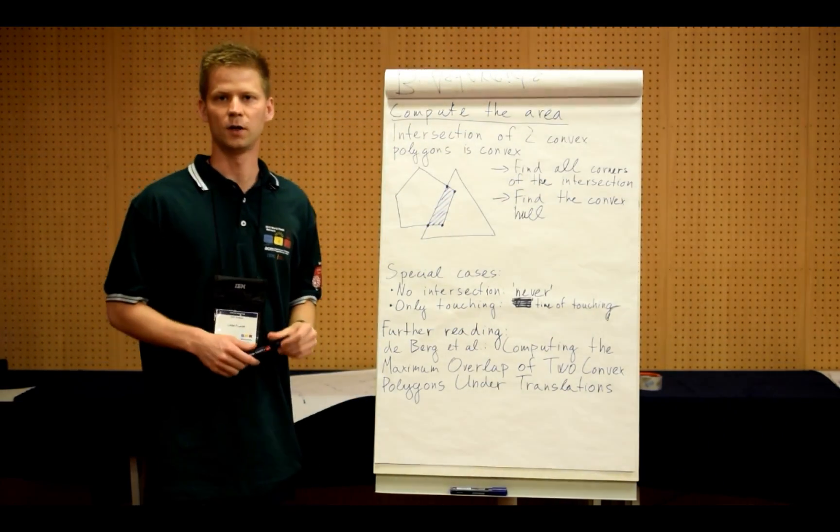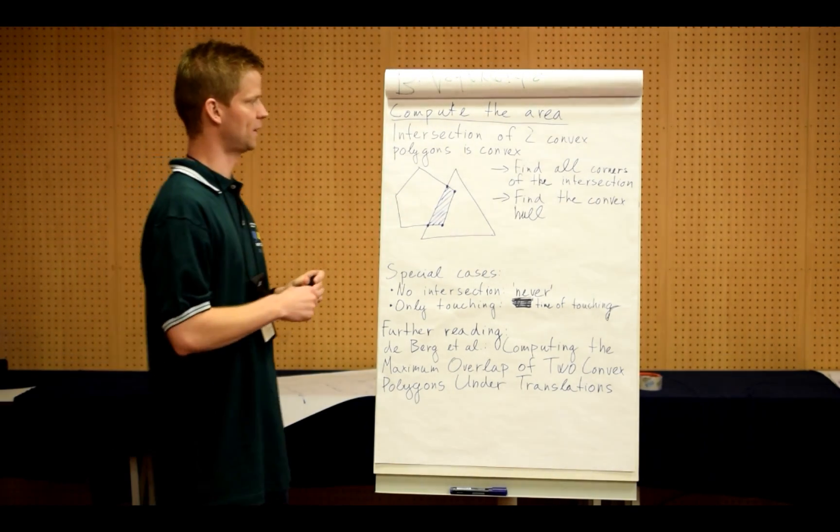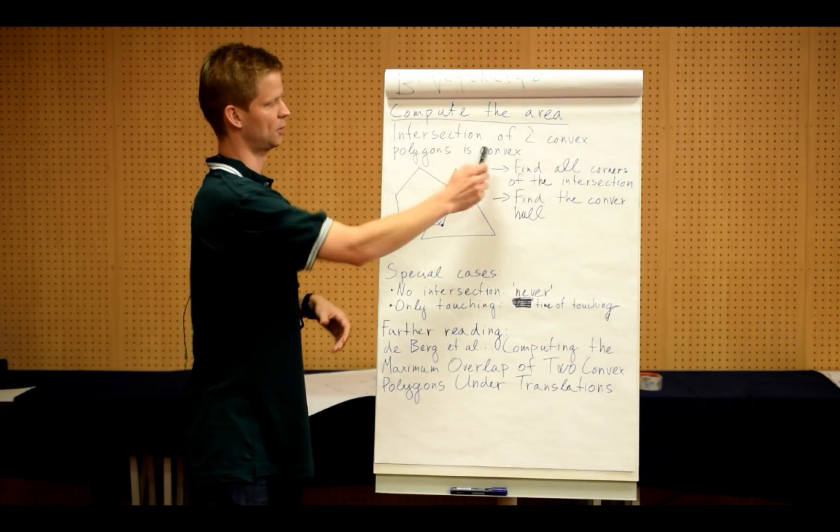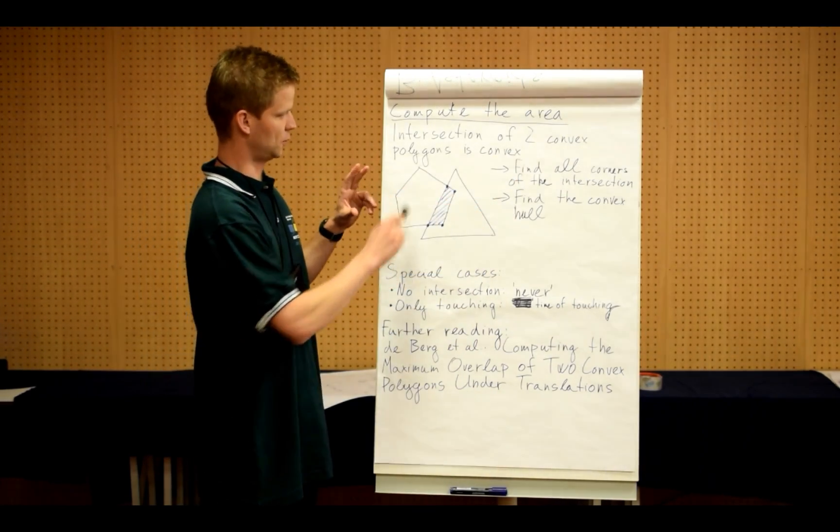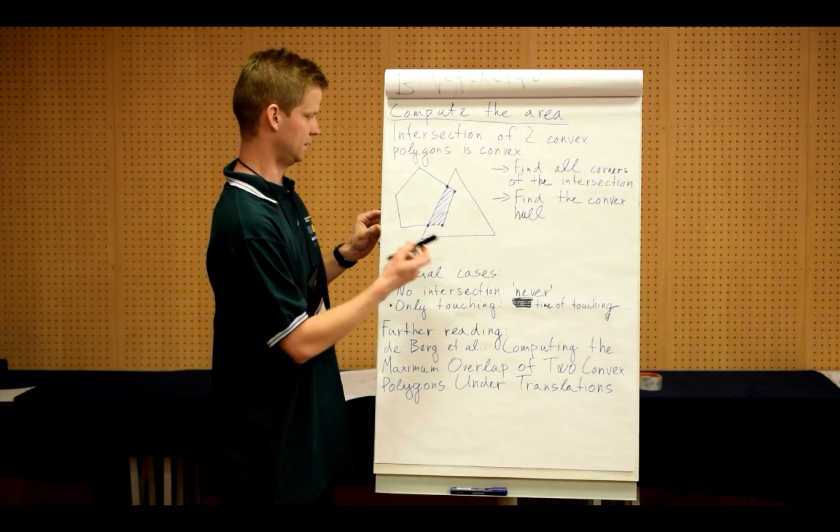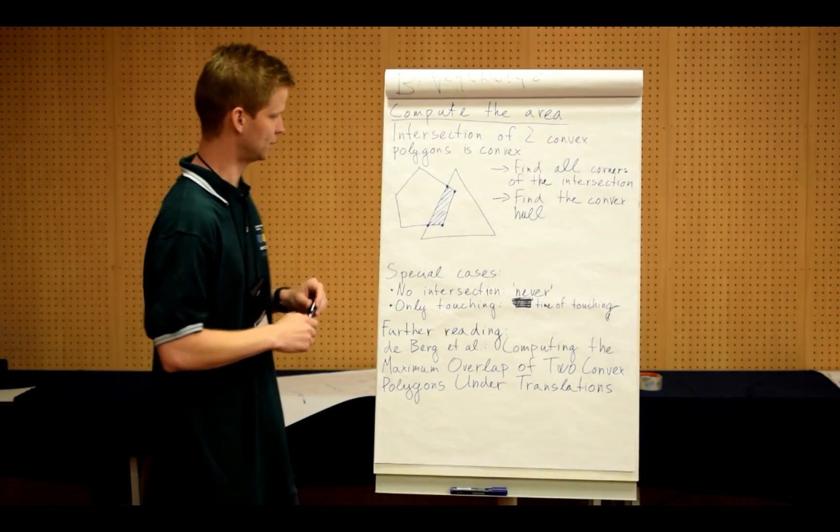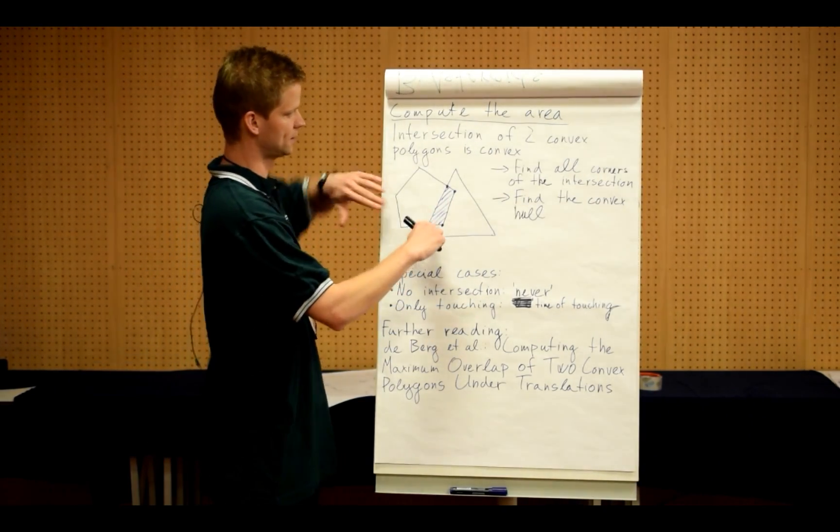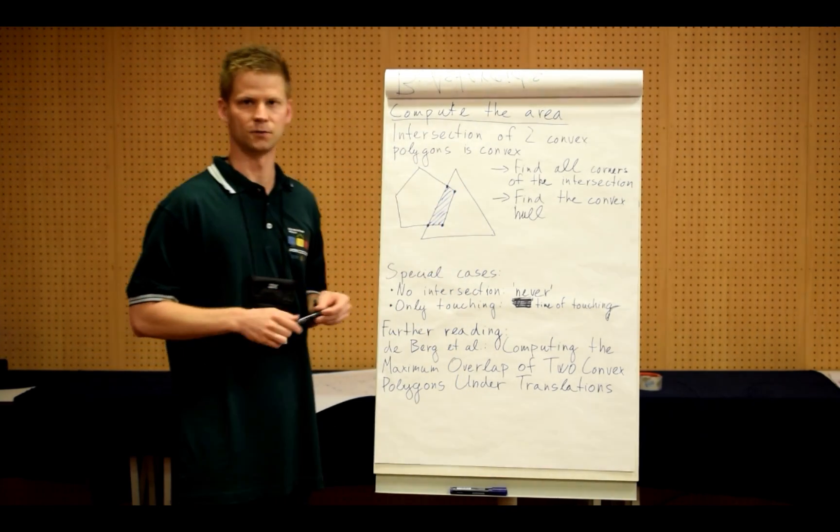So how do we compute the area of the intersection of these polygons? We can use the fact that intersection of two convex polygons is convex. Here you can see an example. We have a pentagon and a triangle, and this is a convex polygon.